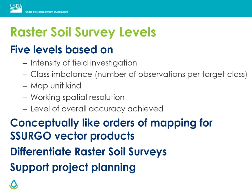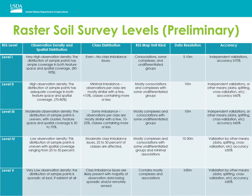Class imbalance addresses the number of observations available per map unit or component you're trying to model. Map unit kind — so complexes, single components, etc. — and the spatial resolution you are working at for modeling, whether five meter or 30 meter spatial resolution, all affect the overall accuracy you can achieve in your final map. The levels are conceptually similar to orders of mapping for the SSURGO vector product and are meant to provide additional information for each published raster soil survey and support project planning. This table provides details for each proposed raster soil survey level and serves as a preliminary key.